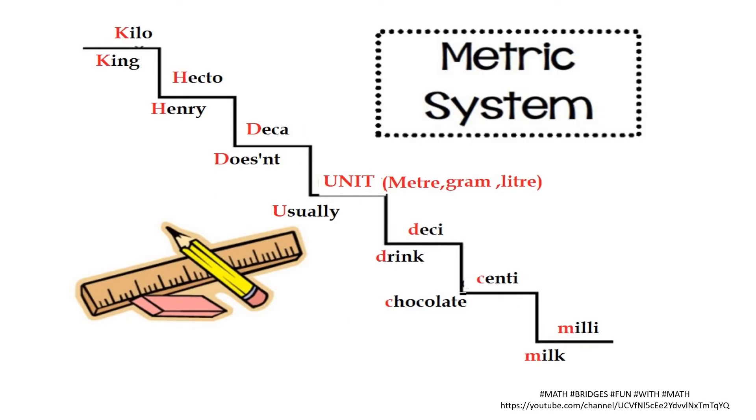You can visualize it here, how the value is decreasing. I have taken in the form of steps like this. Say King Henry does not usually drink chocolate milk. Just if you remember this mnemonic, it will be easy. Kilo, hecto, deca, unit - meter, gram, liter - deci, centi, milli.